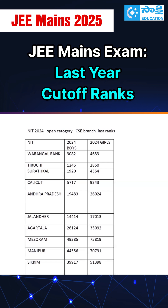Now, for first category colleges, if you get a rank below 10,000 for a general category, you will get a good seat in computer science. Below 20,000, you will get an average college. Whereas below 70,000, you will get lower tier colleges.